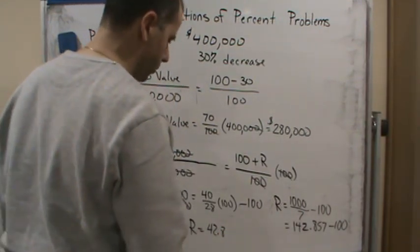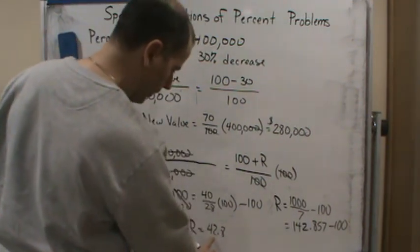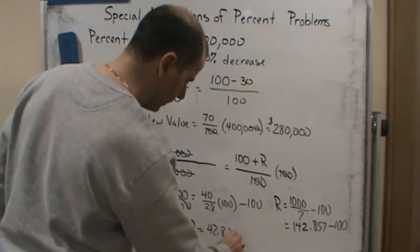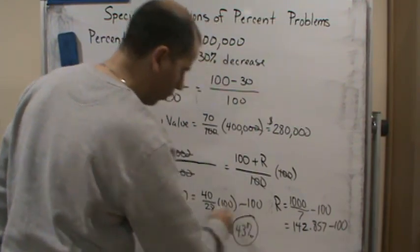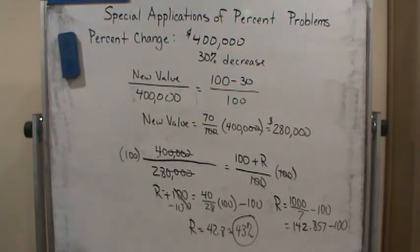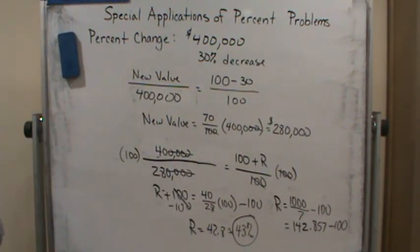And then we want to round it to the nearest percentage. So this is going to be approximately 43%. So in order to get back to your original home value, you would have to have a percent increase of 43%.